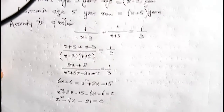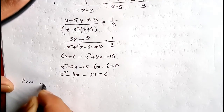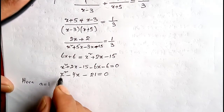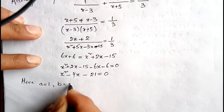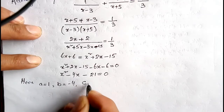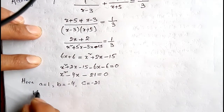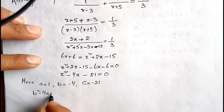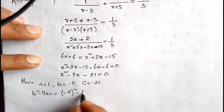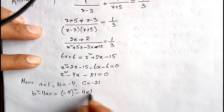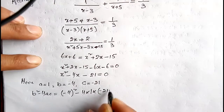Now we will solve this quadratic equation by using the quadratic formula. Here a is equal to 1 (coefficient of x squared), b is equal to minus 4, and c is equal to minus 21. Now b squared minus 4ac is equal to: minus 4 squared minus 4 into 1 into minus 21.